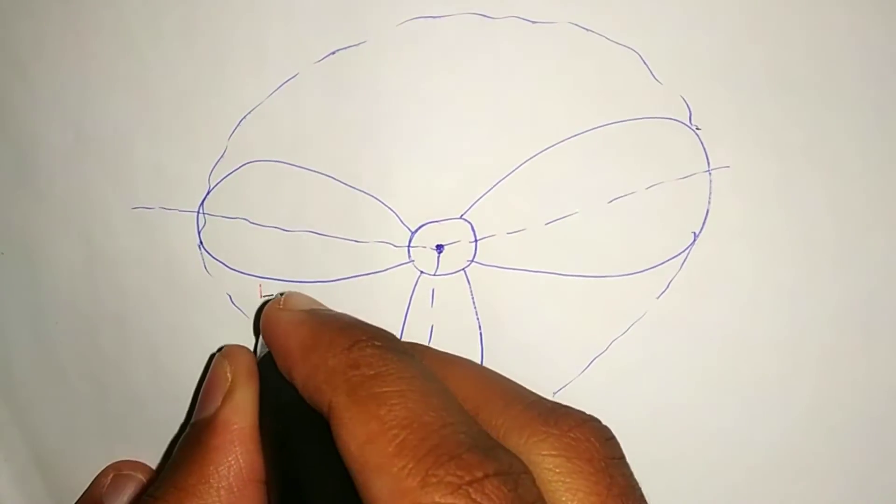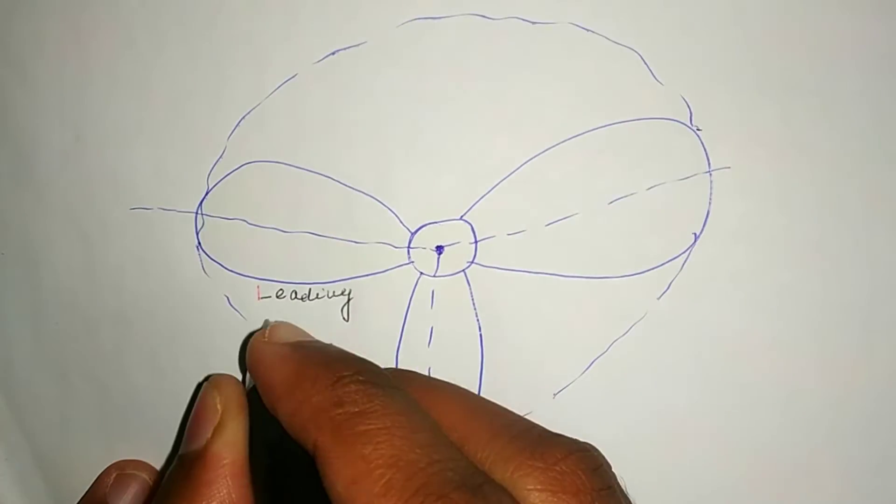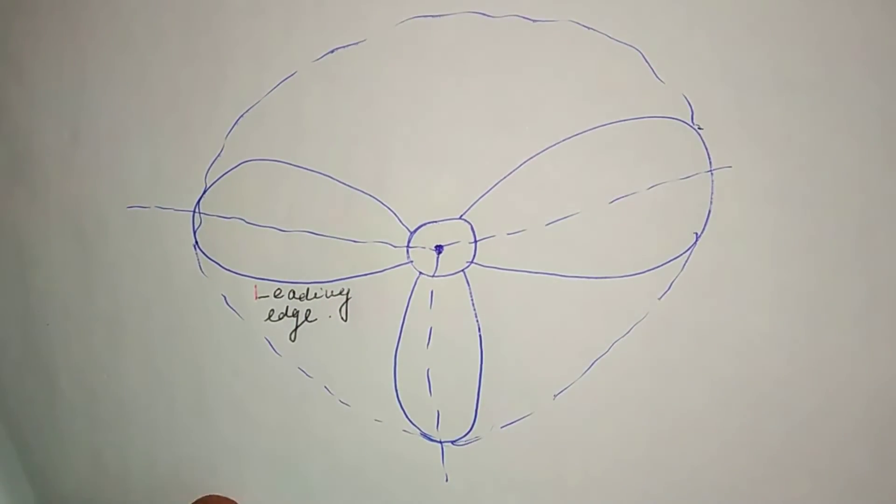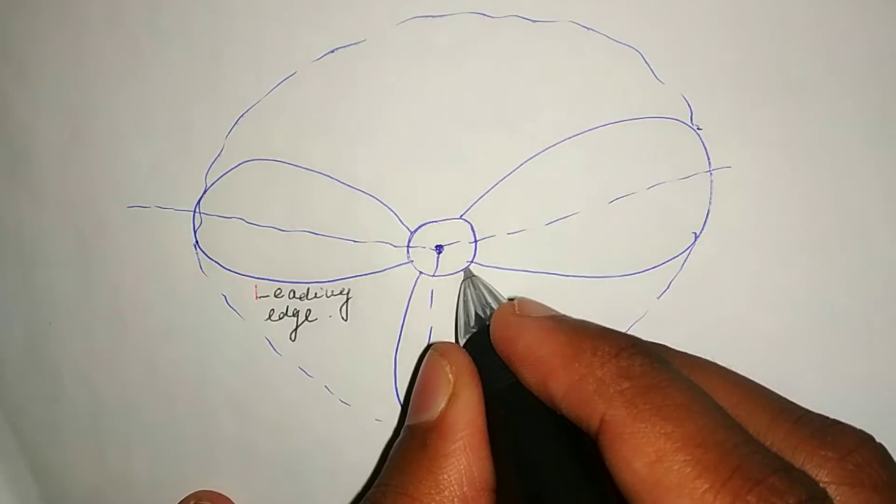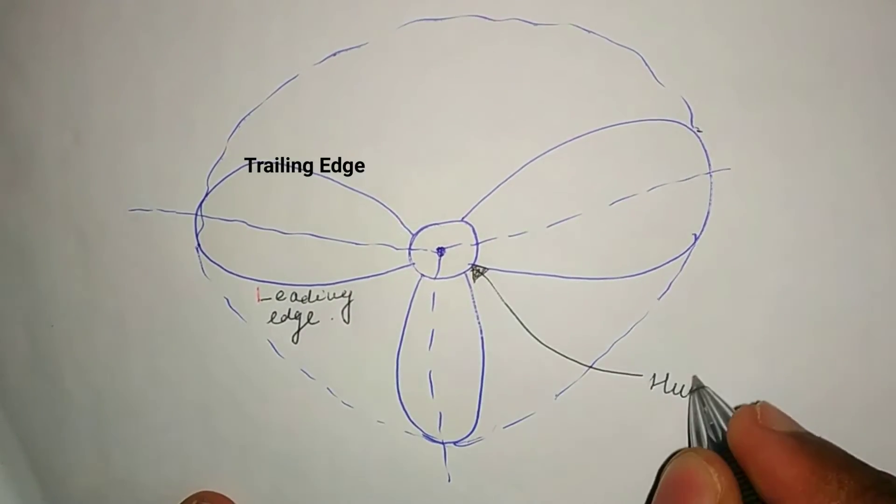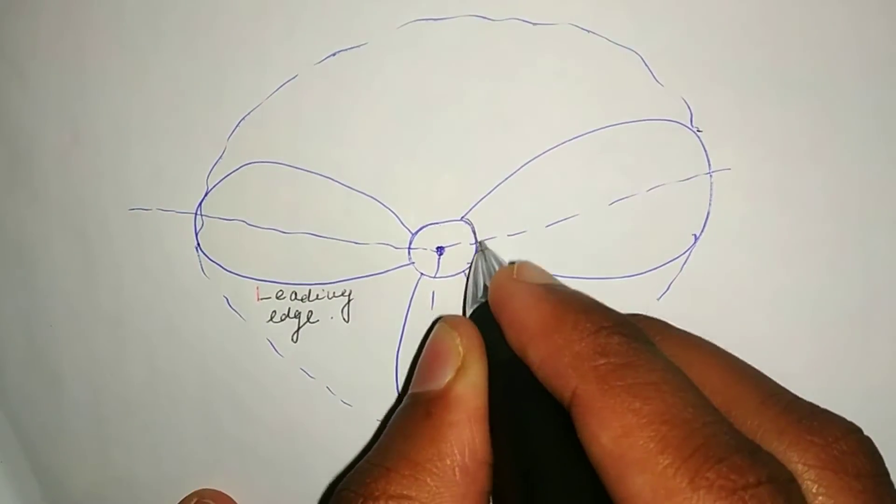Leading edge: the edge of the blade that first cuts the water. Trailing edge: the edge from which water exits the blade.